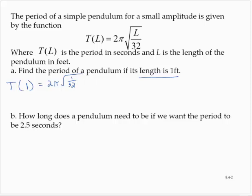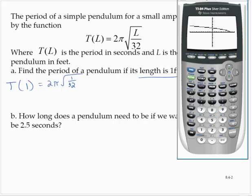We're just going to run that through the calculator. 2π, the π button is over on the right-hand side. It's the second function of the exponent key. 2π times the square root of 1 over 32. Close off the radical.